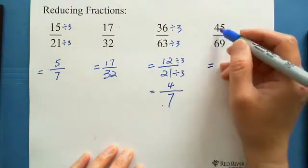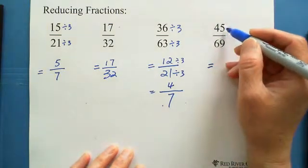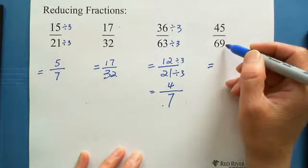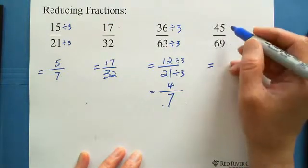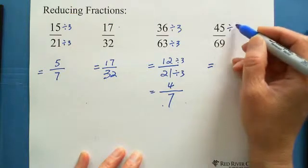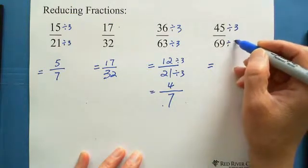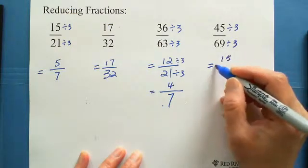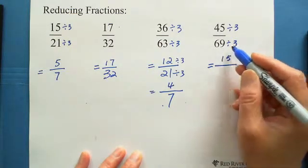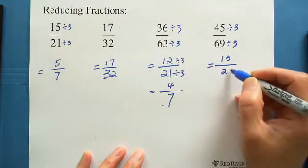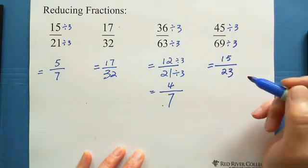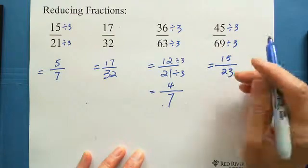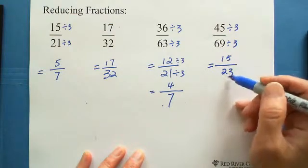The last fraction: 45 over 69. 4 plus 5 is 9 — multiple of 3. 6 plus 9 equals 15 — also multiple of 3. So both are divisible by 3. 45 divided by 3 is 15, and 69 divided by 3 is 23. And since 23 is a prime number, the answer is 15 over 23.